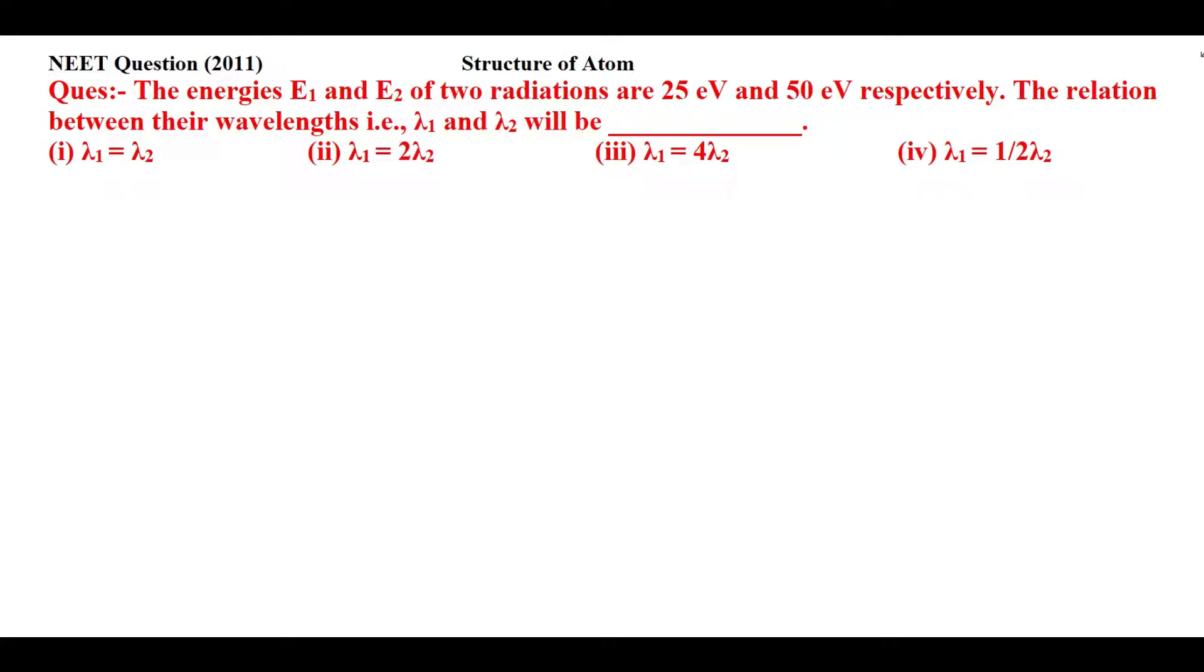Students, this is the 2011 question. Let's read the statement: the energies E₁ and E₂ of two radiations are 25 electron volts and 50 electron volts respectively. The relation between their wavelengths, that is λ₁ and λ₂, will be. In this question we have four options and we have to tell about the relation between wavelength 1 and wavelength 2.